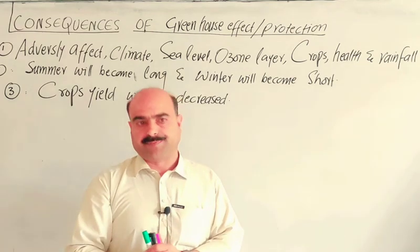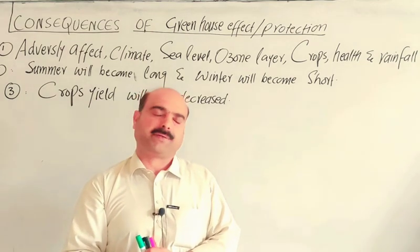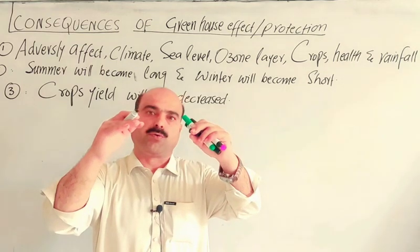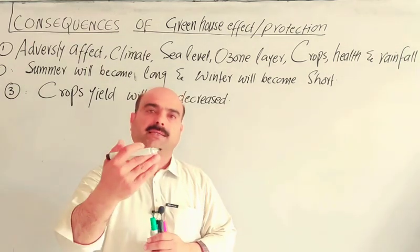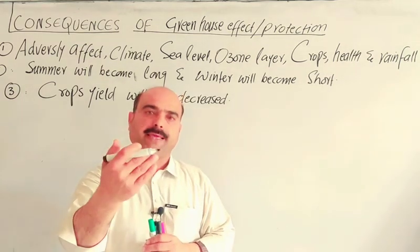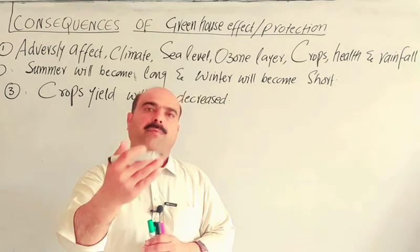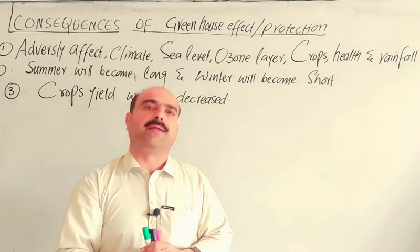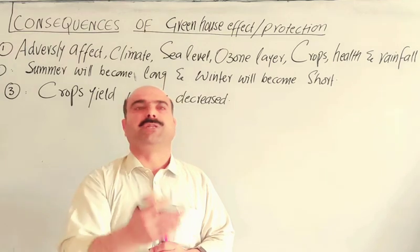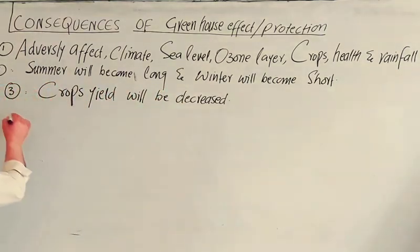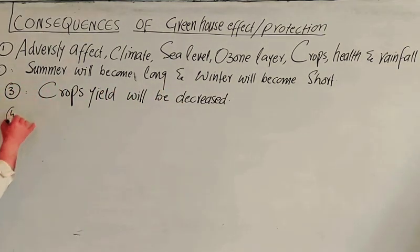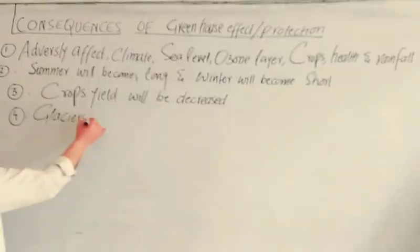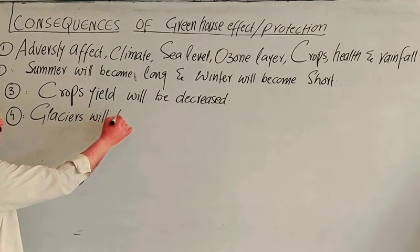Glaciers will melt as a result of the rising average temperature of the earth's surface caused by the greenhouse effect.